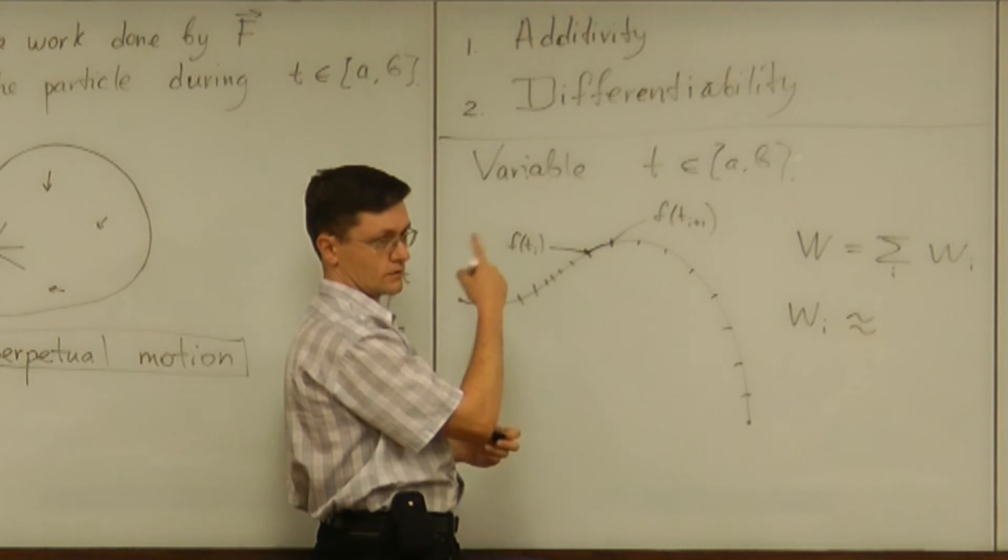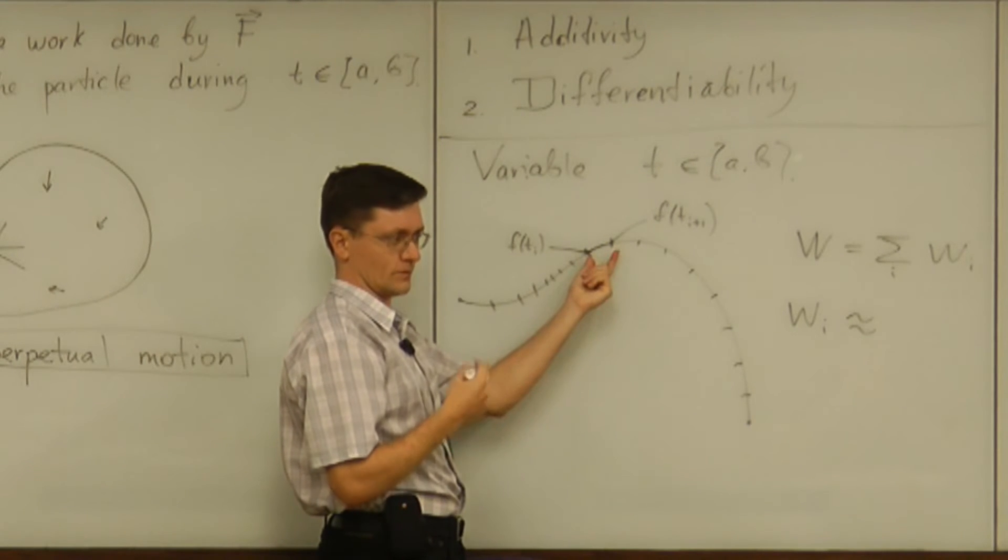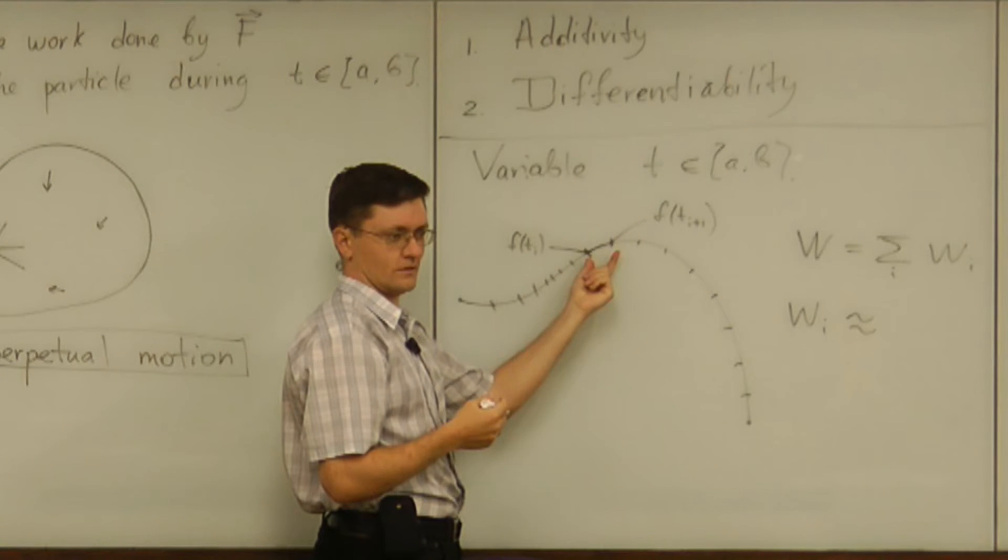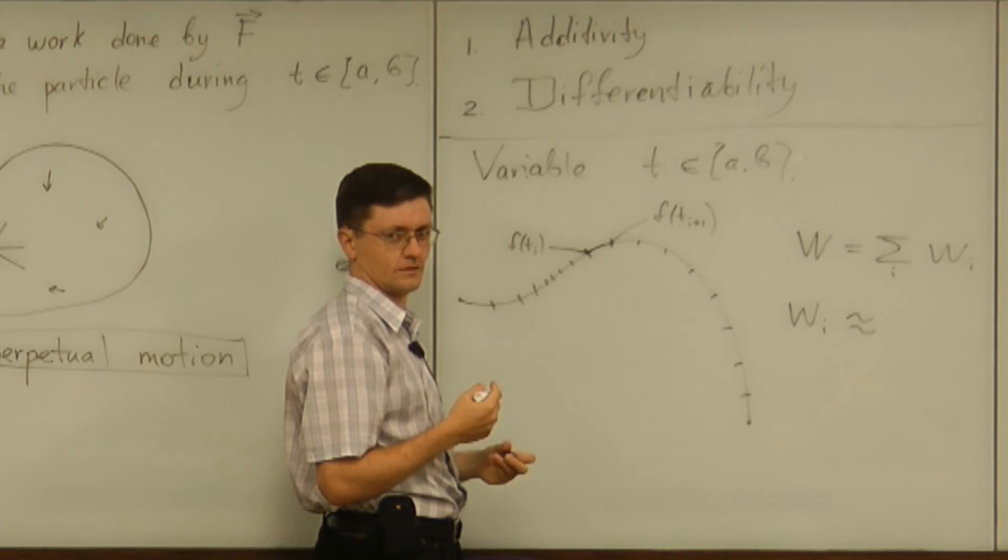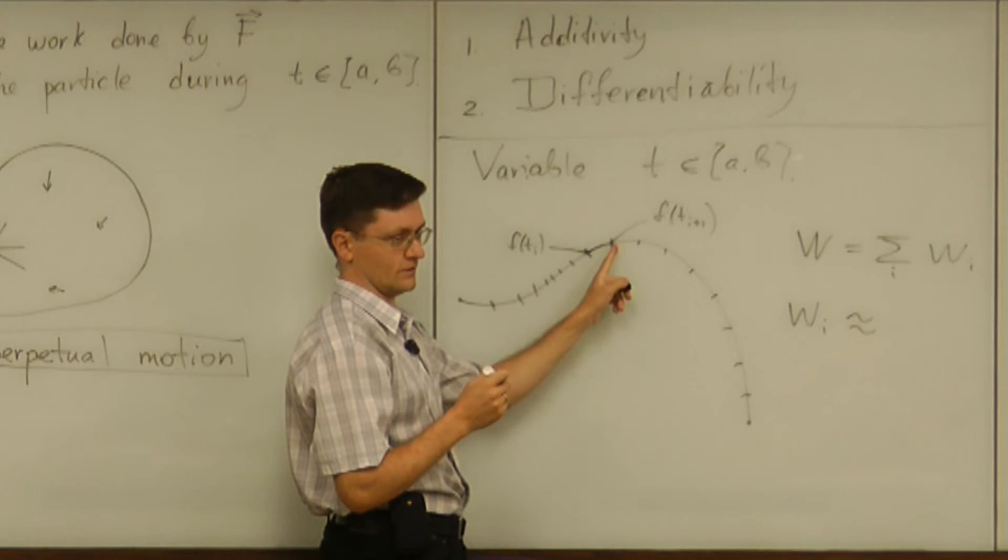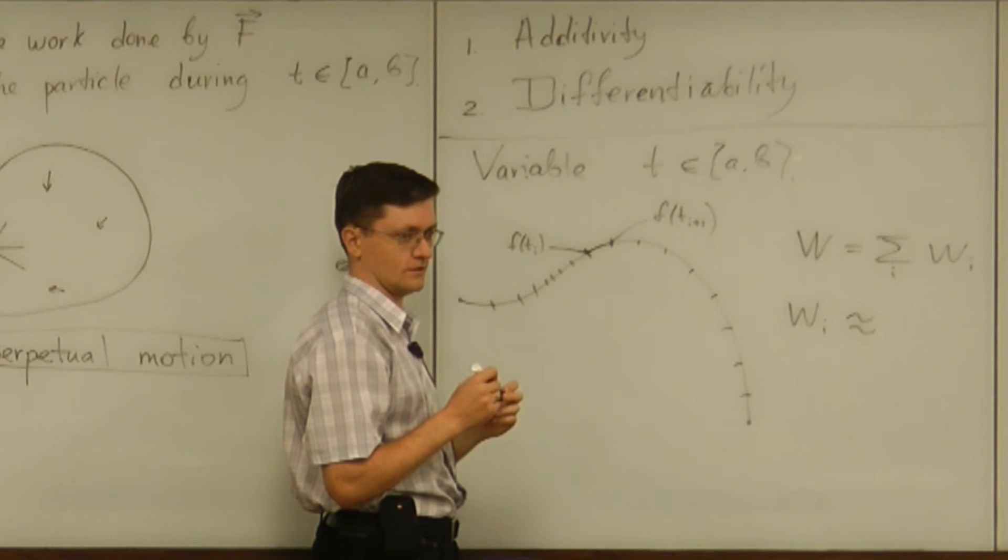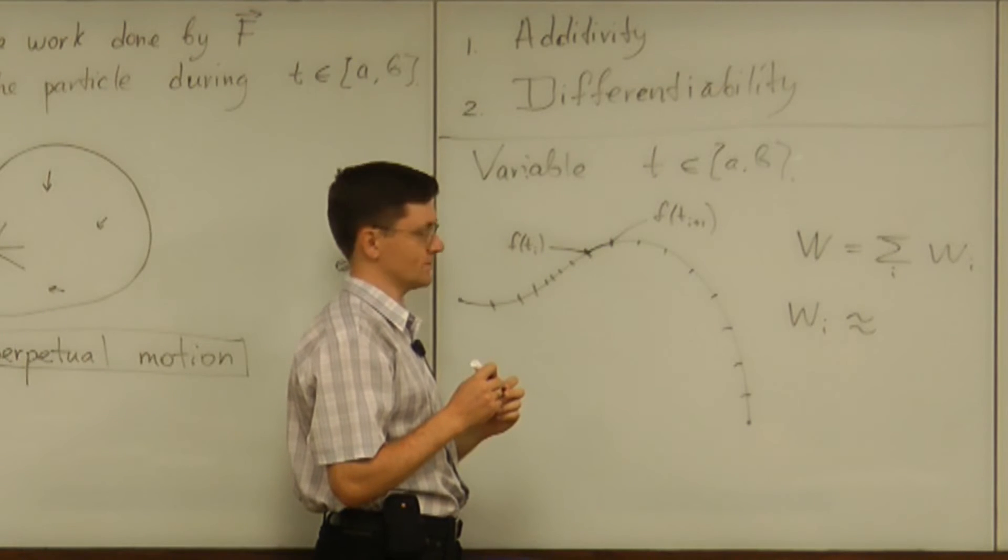But since we are in a physics context, we probably want to linearize from physics point of view. And how will that go? Would the physicist replace this motion with the motion from the end point to the end point? What would the physicist do?